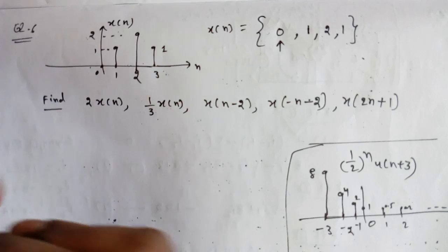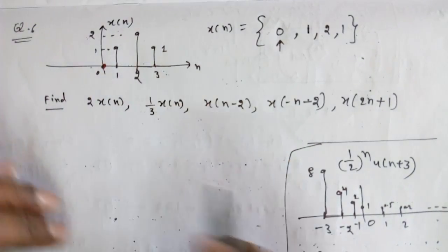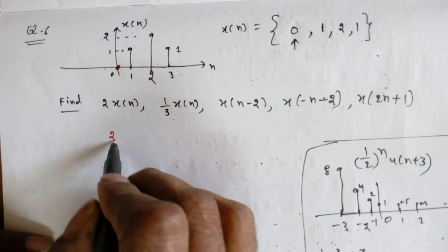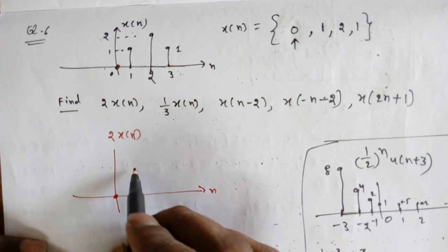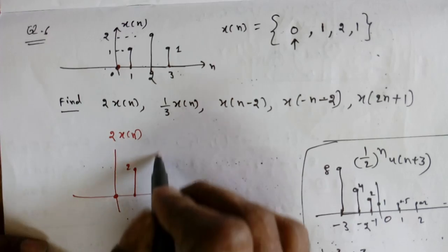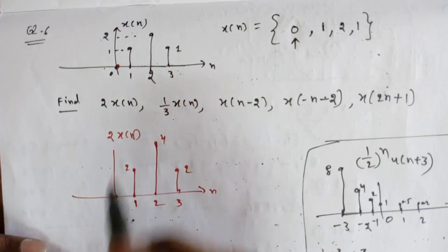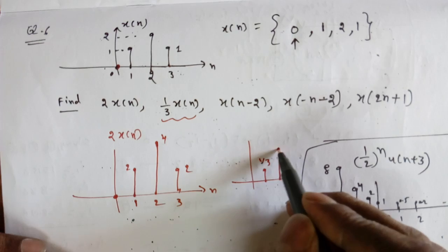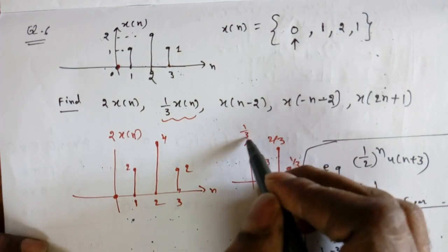Next, we will see some operations. Suppose x[n] is given with values: at 0 → 0, at 1 → 1, at 2 → 2, at 3 → 1. For 2·x[n], there is no shifting, only amplitude scaling: at 0 → 0, at 1 → 2, at 2 → 4, at 3 → 2. For (1/3)·x[n], amplitude is scaled to 1/3, 2/3, and 1/3 at positions 1, 2, 3 respectively.